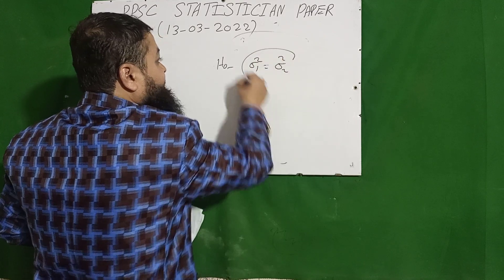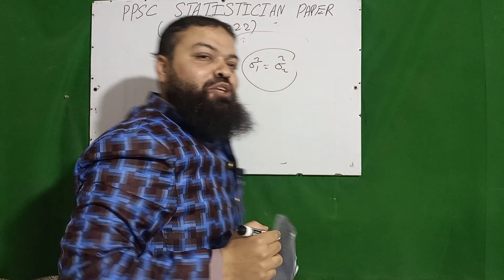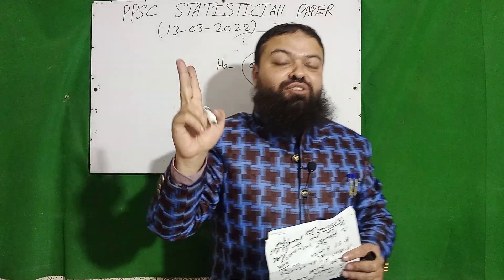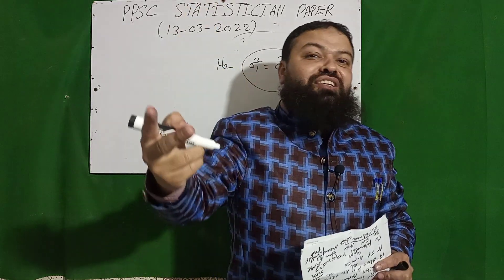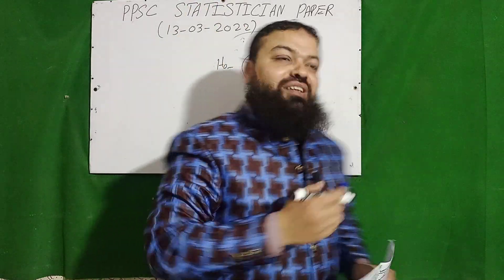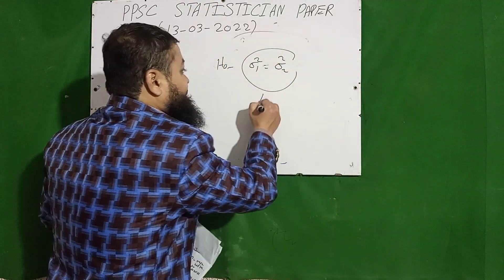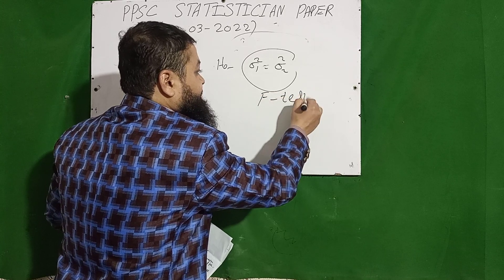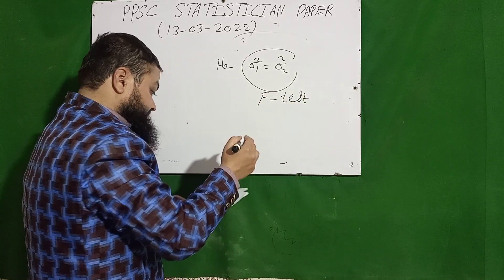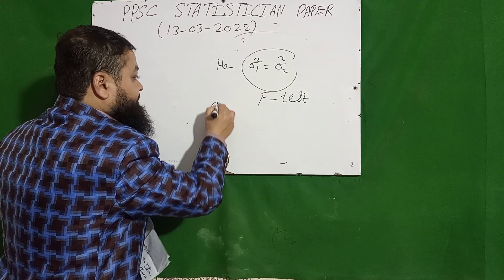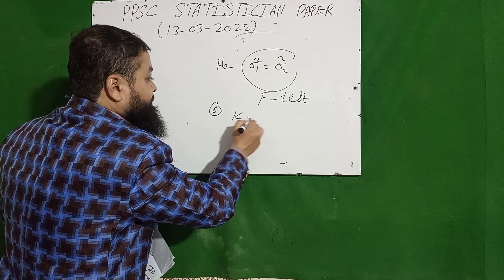The next question: if we are to test H₀: σ₁² = σ₂² — whenever testing the equality of two population variances — the F-test is used.